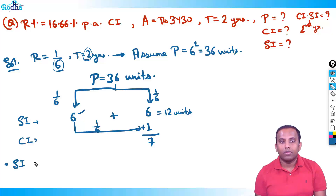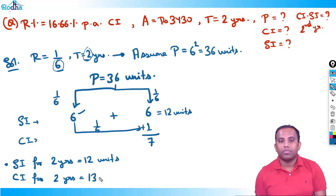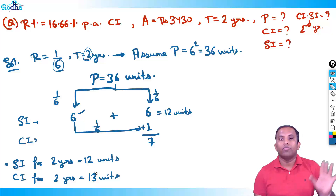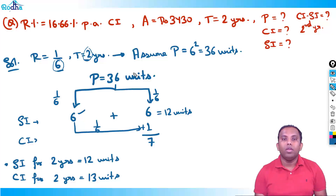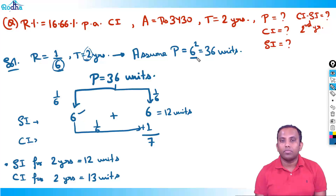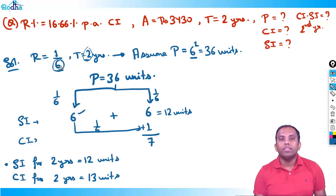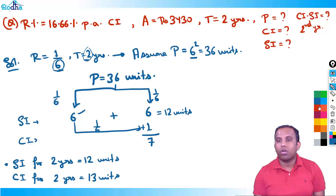So SI for two years is 12 units and CI for two years is 13 units. I'm just explaining the concept right now, not solving the question yet. This question can be solved very quickly once you understand how to avoid decimals and what to assume for the principle. If rate is in 1/x form — here it is 1/6 — and time is two years, assume principle to be 6 squared. If time was three years, assume principle to be 6 cubed; four years, 6 to the power 4. Whatever it is, raise it to the time — that eliminates all fractions and decimals and we can solve in integers.